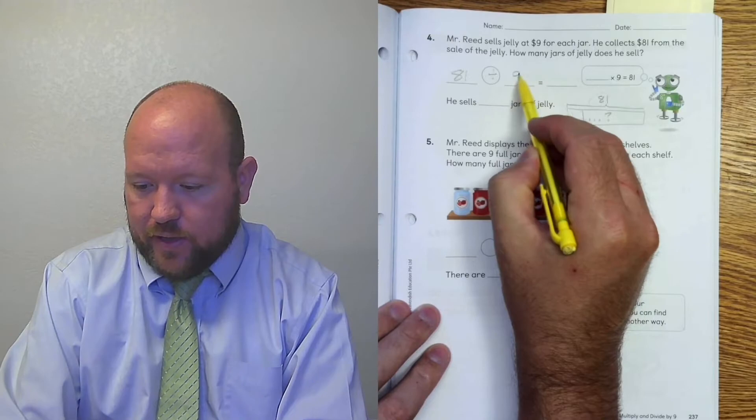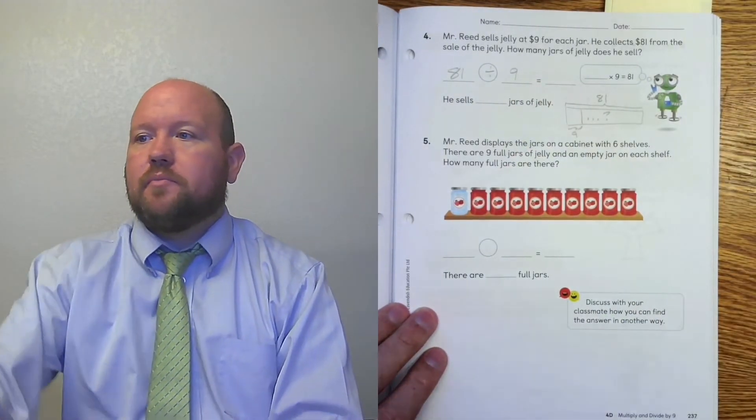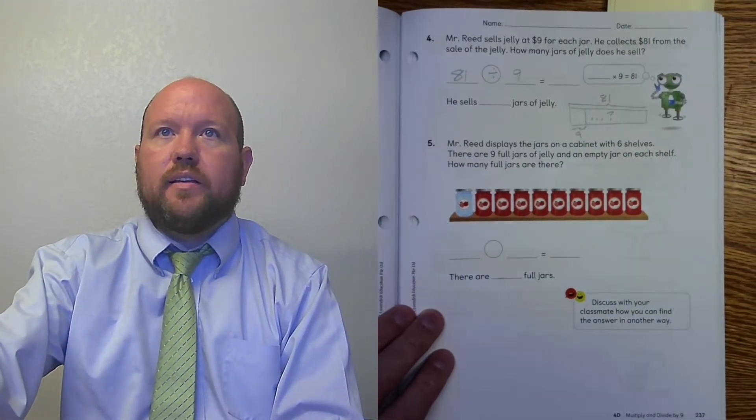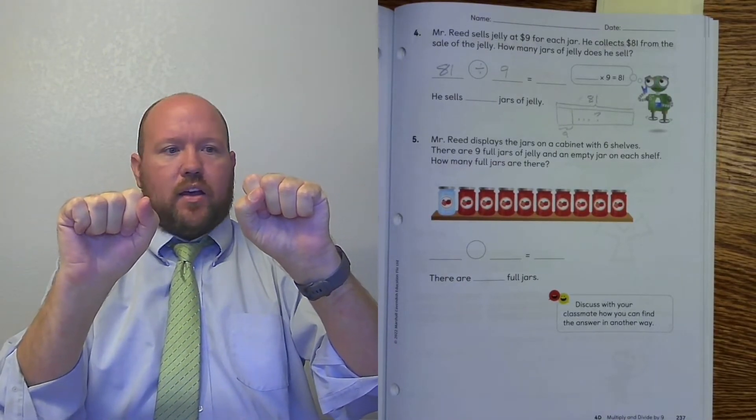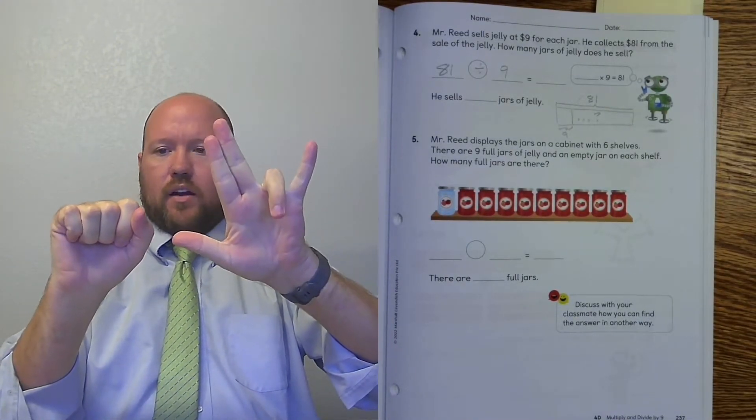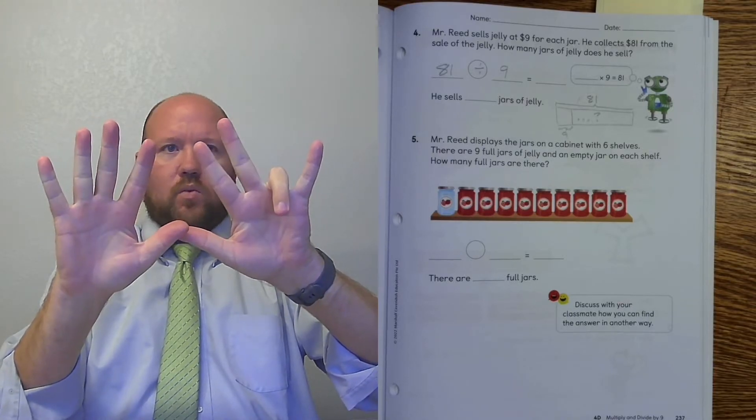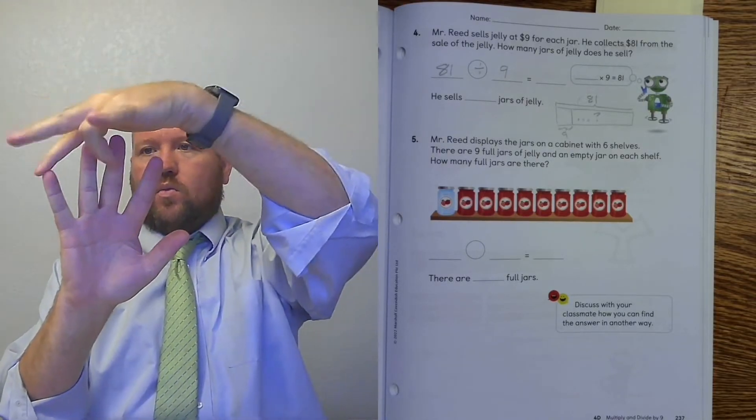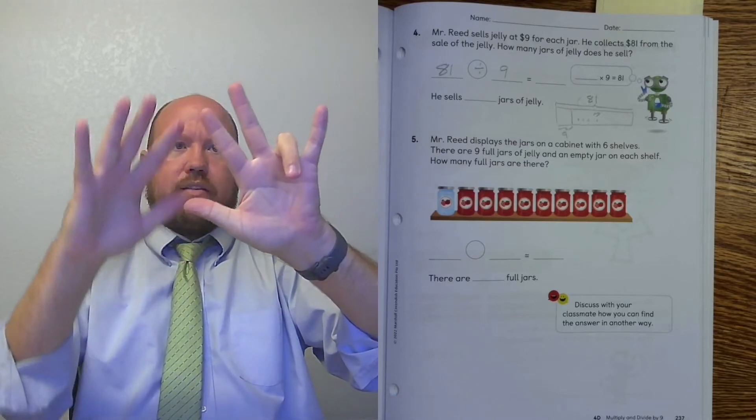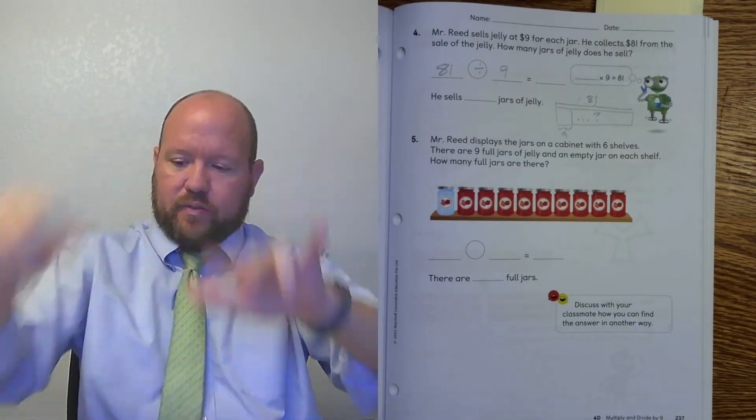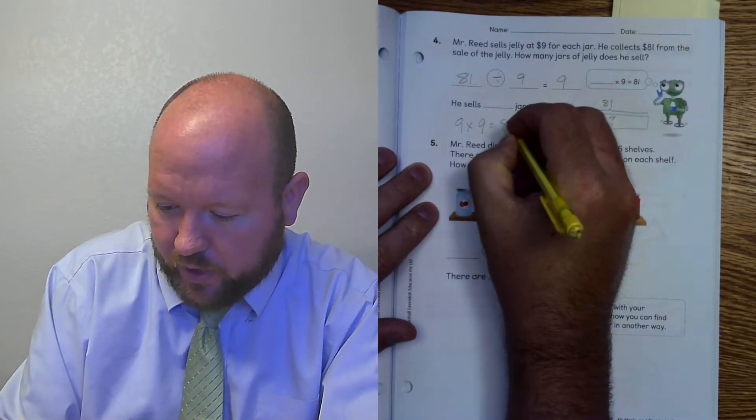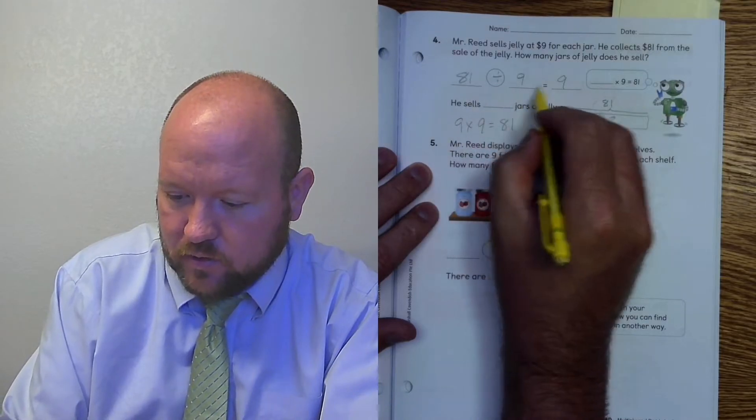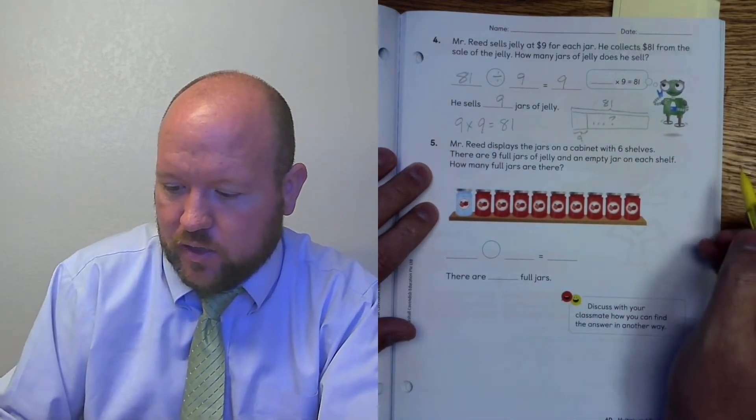81 divided by 9. So I need 8 on this side and 1 over here. So there's 8 and 1. What finger do I put down? 1, 2, 3, 4, 5, 6, 7, 8, 9. I put the 9th finger down. 81 divided by 9 is 9. And that's true because 9 times 9 equals 81. So he sells 9 jars of jelly.